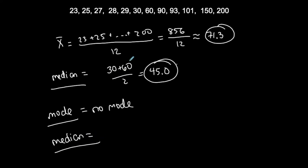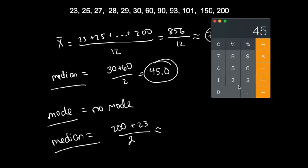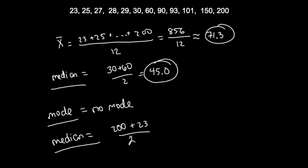Now let's find the mid-range. I take the maximum data value plus the minimum data value — the biggest plus the smallest, which is easy to spot when the data is ordered — and divide by 2. So 200 plus 23, divided by 2, gives me 111.5. This is exactly 111.5, so no approximate symbol needed.